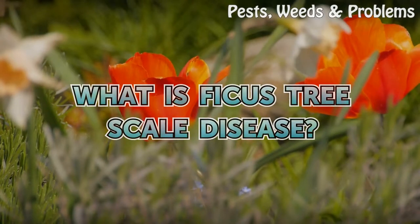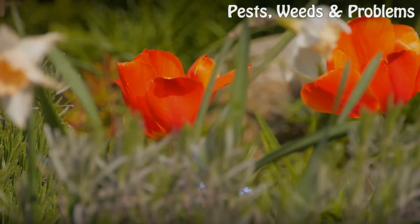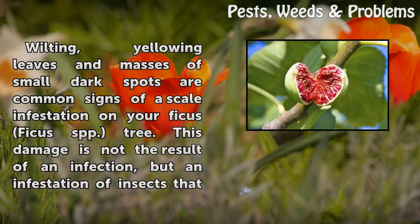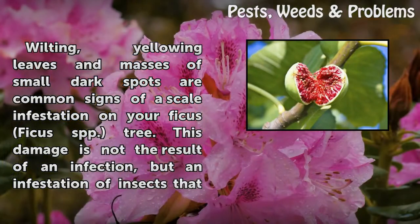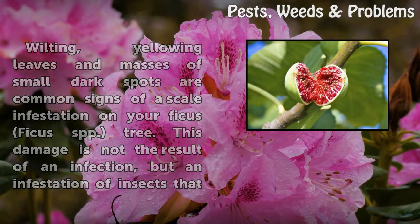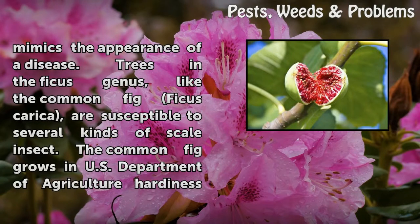What is Ficus Tree Scale Disease? Wilting, yellowing leaves, and masses of small dark spots are common signs of a scale infestation on your Ficus. This damage is not the result of an infection, but an infestation of insects that mimics the appearance of a disease.